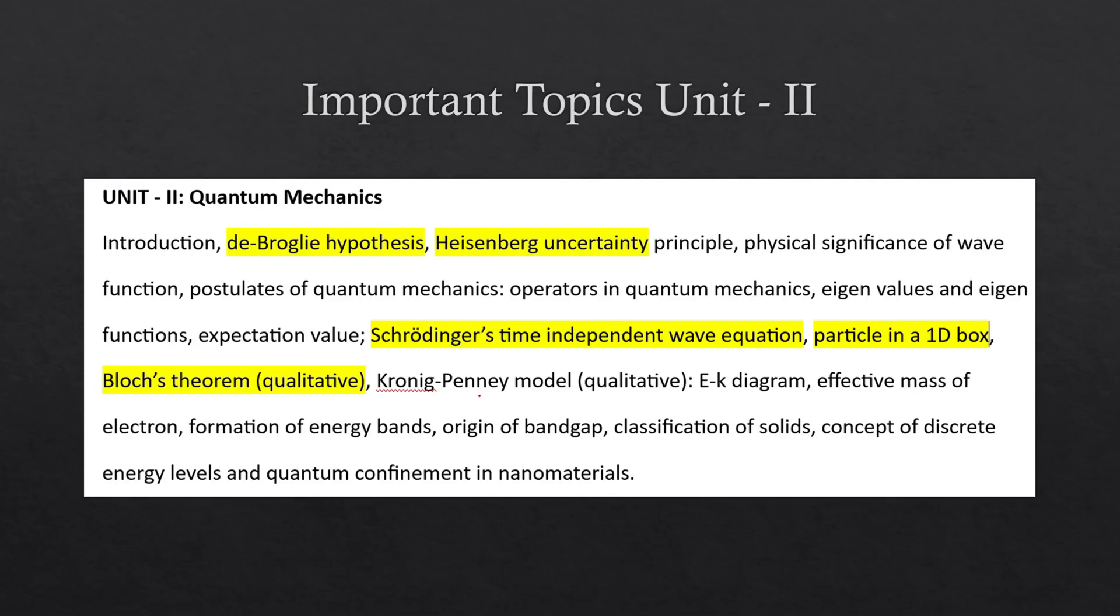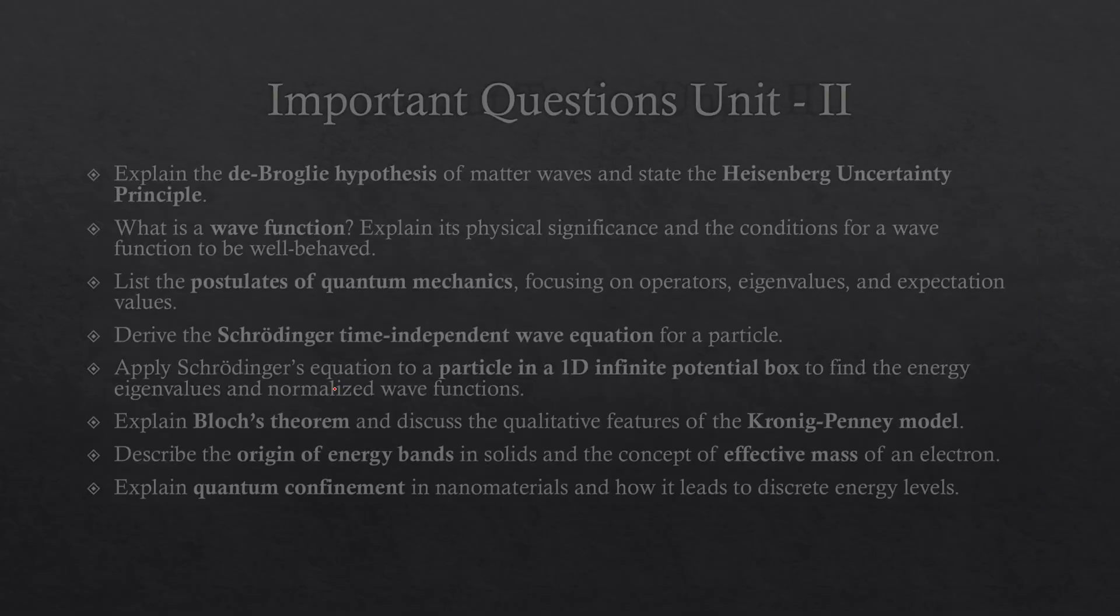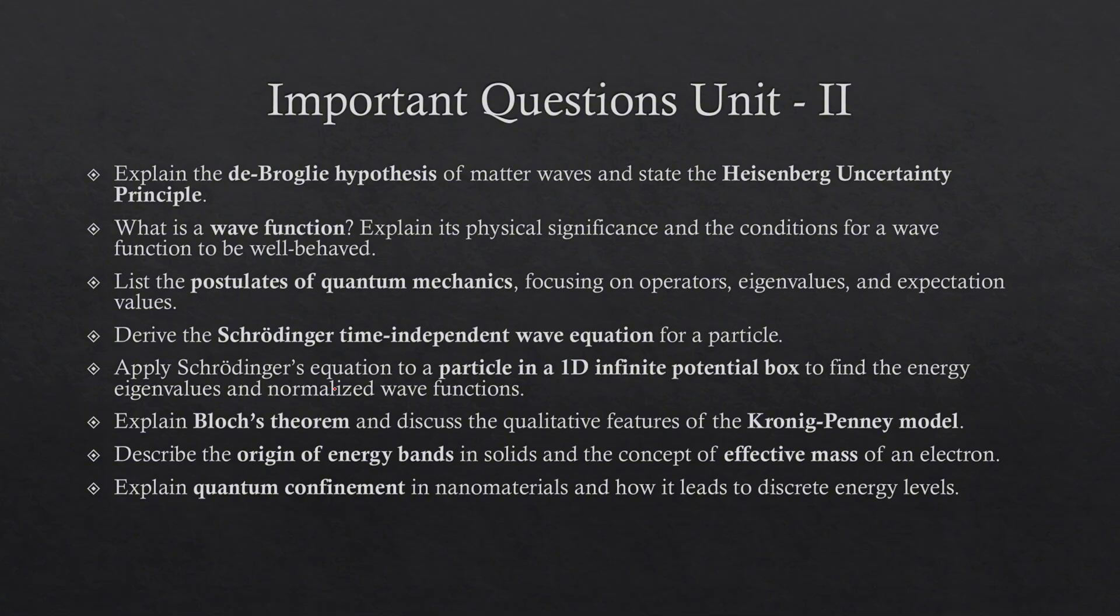Important topics for unit 2: De Broglie hypothesis, Heisenberg's uncertainty principle, Schrodinger's time independent wave equation, and Bloch's theorem. Basically from unit 2 I have covered each and every topic where possible questions can be asked. You can download the PDF which is given in description. At least if two to three questions from this comes, that will be definitely helpful for students.